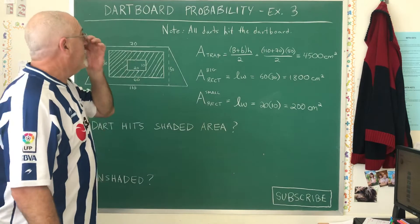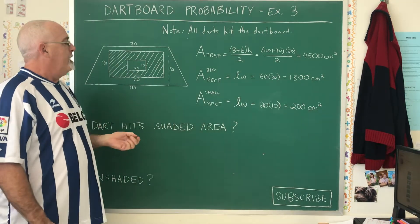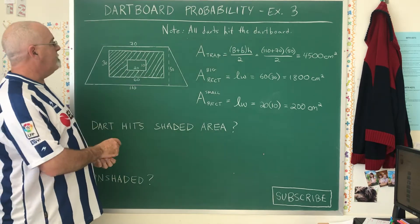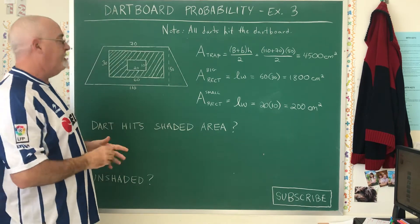In today's daily dose of math, we're looking at dartboard probability. This is example three. Remember, all darts hit the dartboard. We are not trying to calculate a probability where some of the darts could land outside because we just do not have enough information.